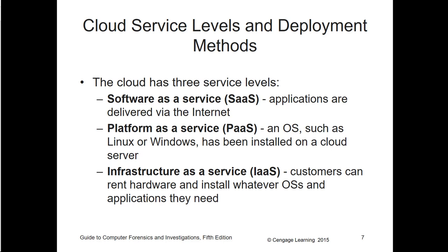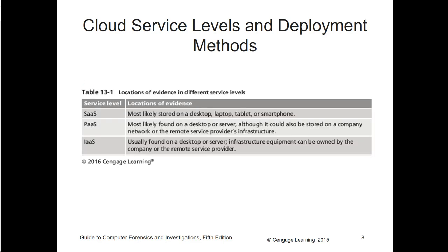SaaS refers to applications delivered via the internet. Platform as a Service could be an operating system such as Linux or Windows installed on a cloud server that you have access to on the fly. Infrastructure as a Service is infrastructure that you can pay as you go. You can get most things now as a service — including disaster recovery as a service.